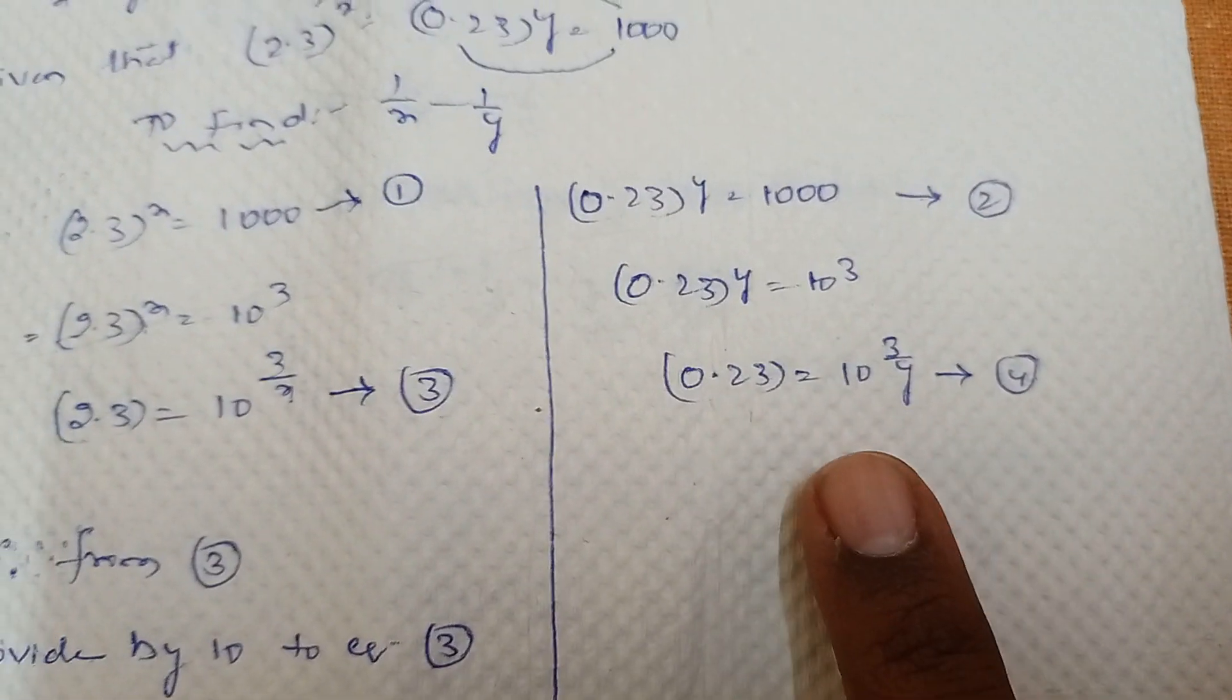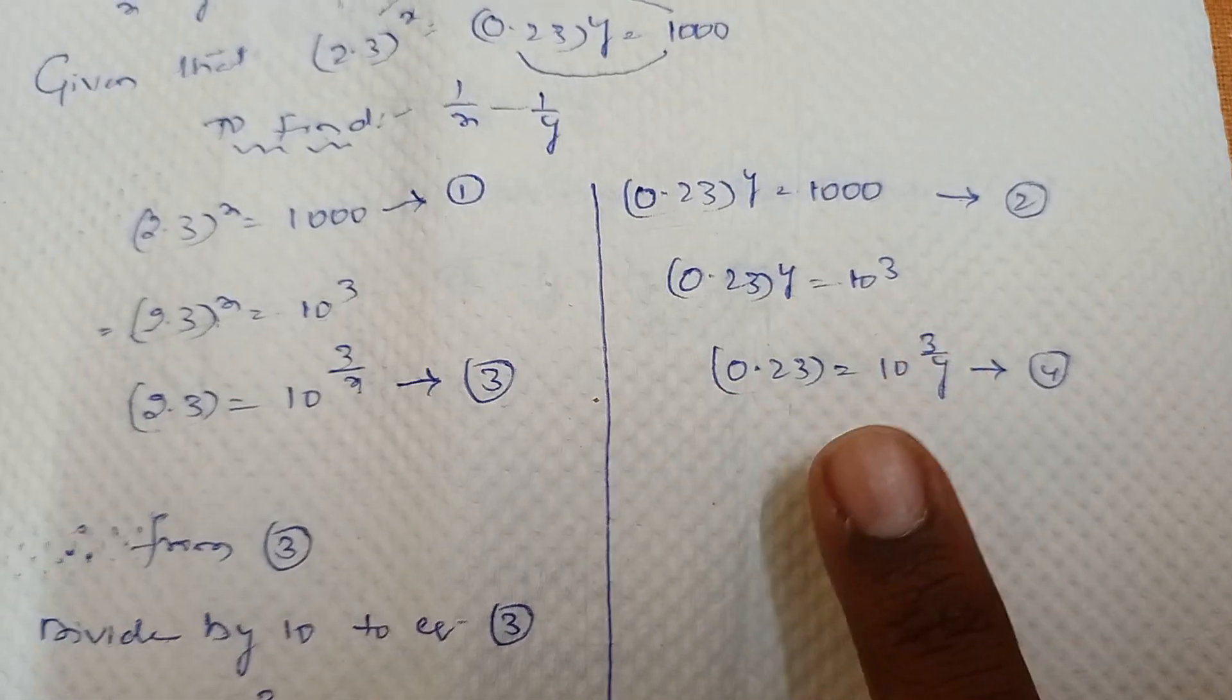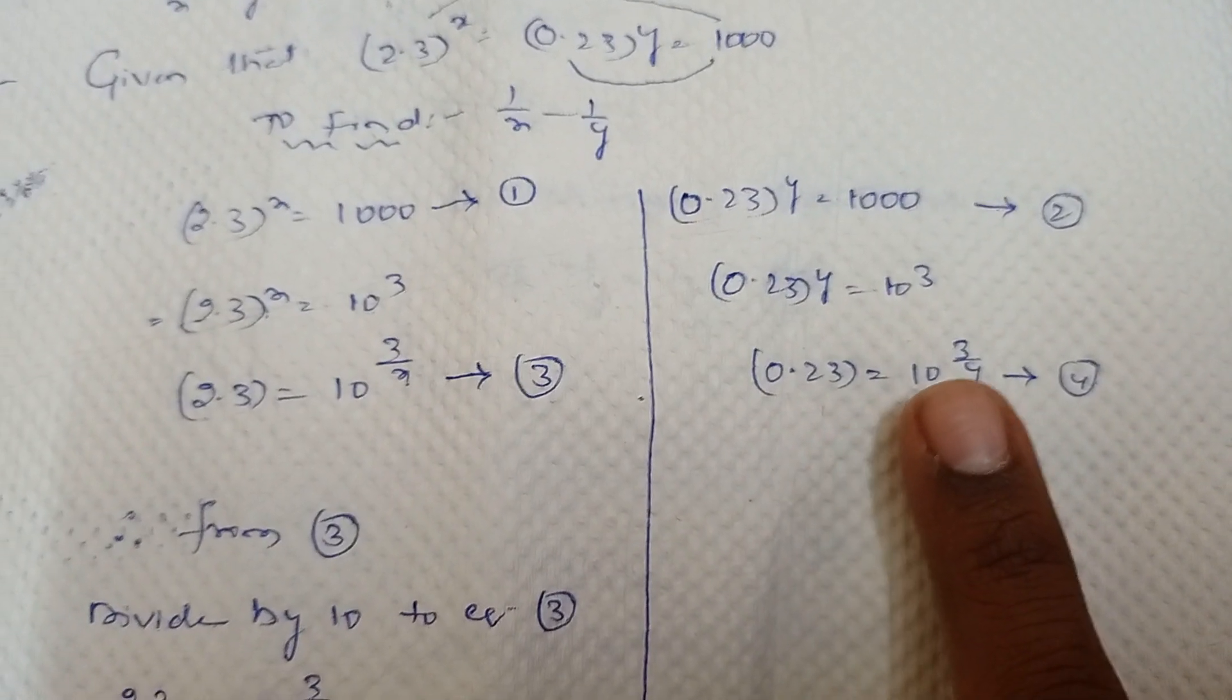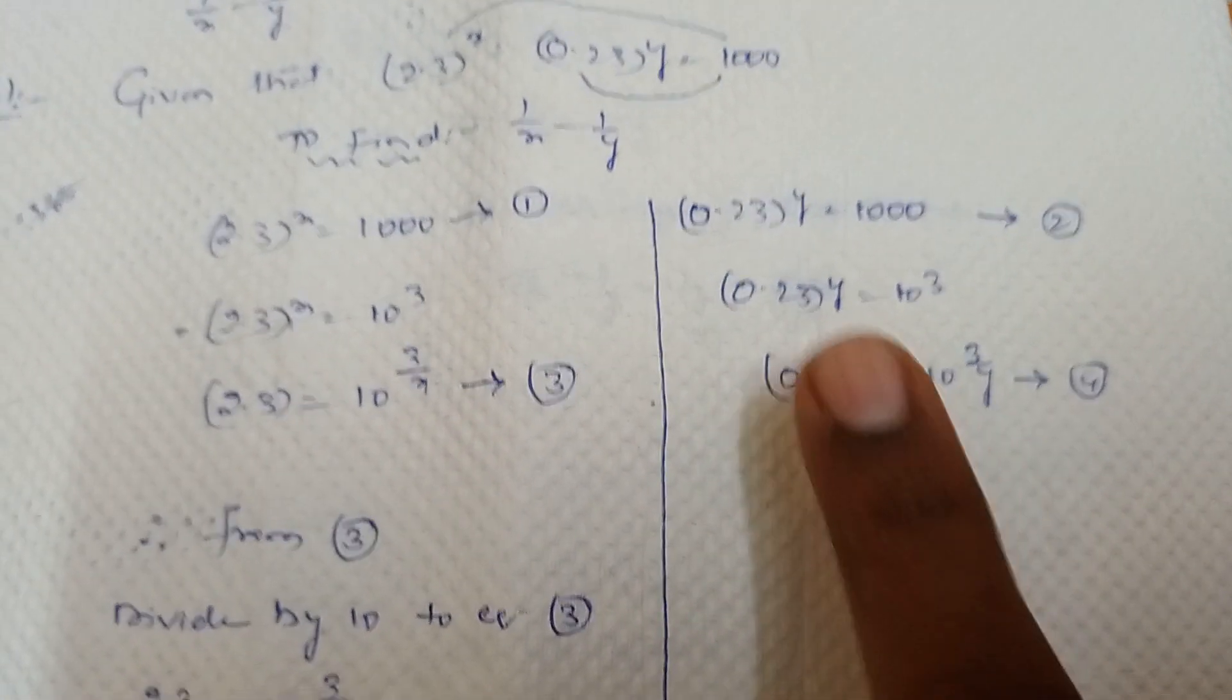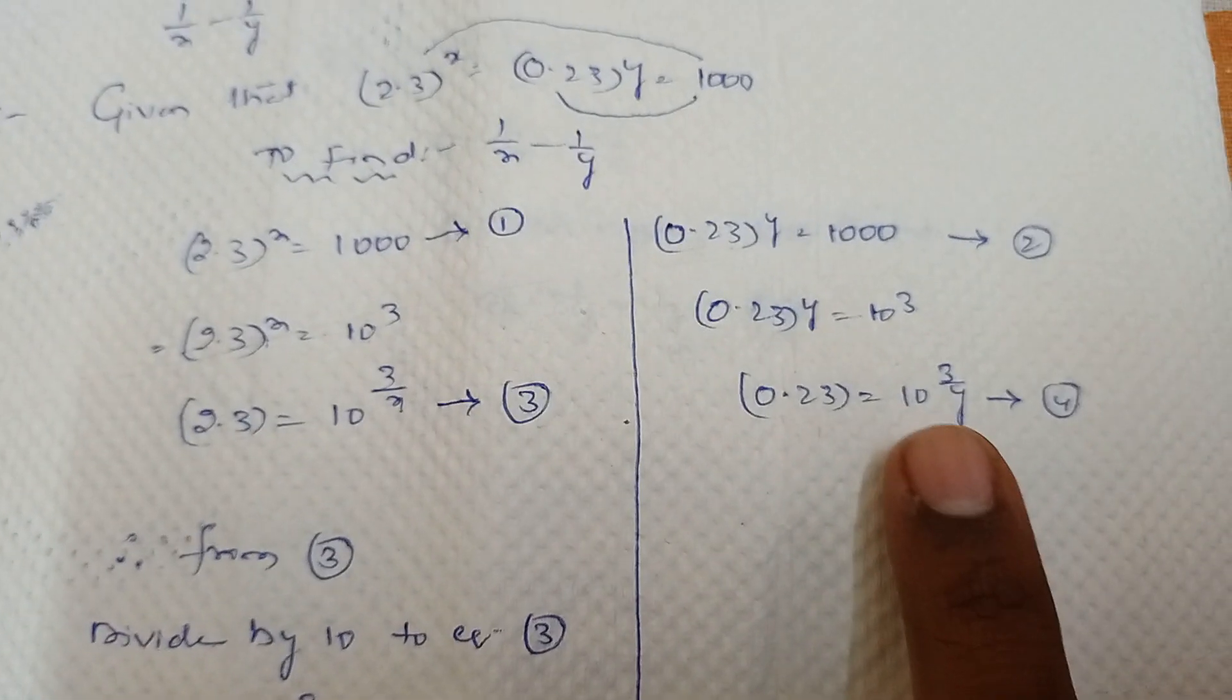Similarly, 0.23 whole power y equal to 10 cube. So 0.23 equal to 10 power 3 by y. I send y to RHS, it becomes 1 by y. That is equation 4.